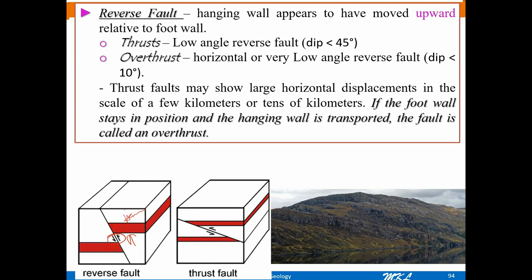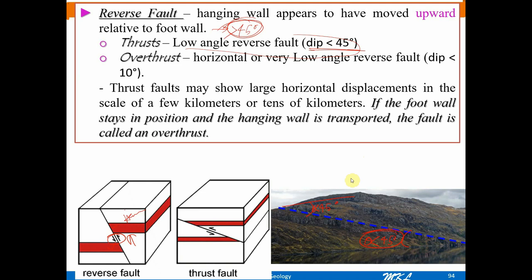A reverse fault can be of different subtypes based on the dip angle. When the dip angle is greater than 45 degrees, it is generally called a reverse fault. When the dip angle is less than 45 degrees, it is called a thrust fault. If the angle is very low — less than 10 degrees — it is called an overthrust condition. Reverse faults are usually high-angle faults produced by compressional forces, and this fault type indicates shortening of the Earth's crust.